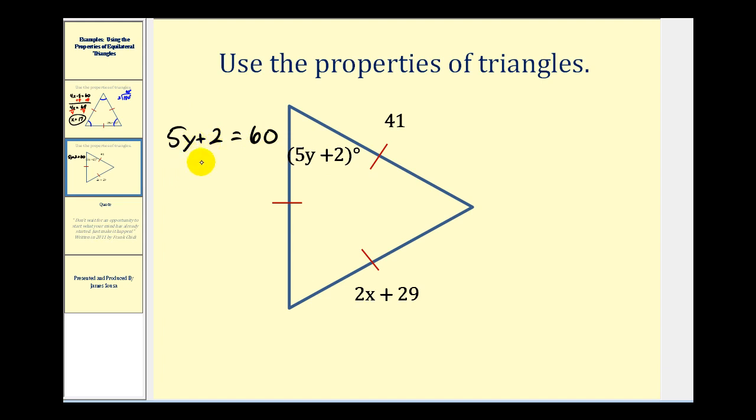So we'll subtract 2 on both sides. That'll give us 5y equals 58. Divide both sides by 5. This isn't going to come out quite as nice as the previous example. 58 divided by 5. This will be 11 and three-fifths or as a decimal it would be 11.6.